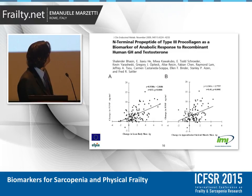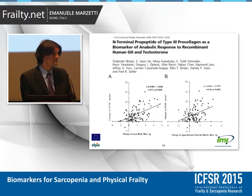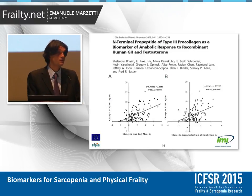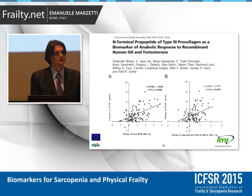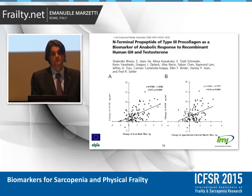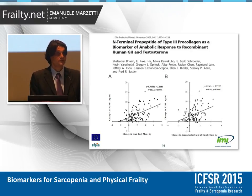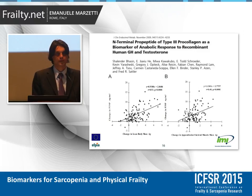The amino-propeptide of type-III procollagen is an interesting biomarker, in the sense that it is not a biomarker for muscle atrophy — rather, it is a biomarker for muscle anabolism. So it may be worth measuring this biomarker at baseline and after an intervention to get a sense of the efficacy of the intervention.